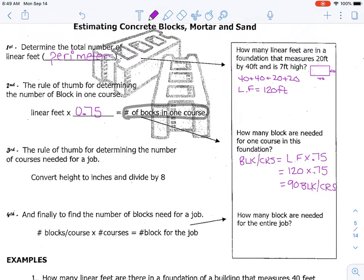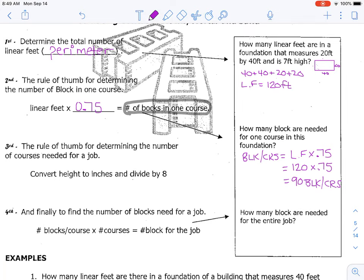Now we've got to determine how many rows do we need to make it seven feet high to make it as tall as we need it to be. So our third step is that we're going to convert the height into inches and then divide by eight. So our height in our problem was seven feet. We would take that seven feet and multiply it by 12 to turn it into inches, and then we're going to divide it by eight. And that's going to tell us how many courses we need. 10.5 courses.